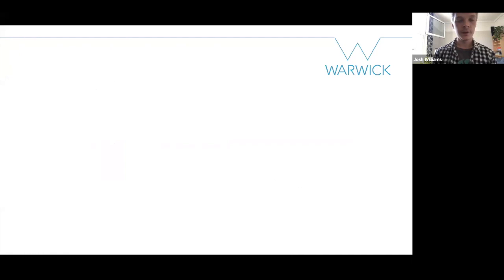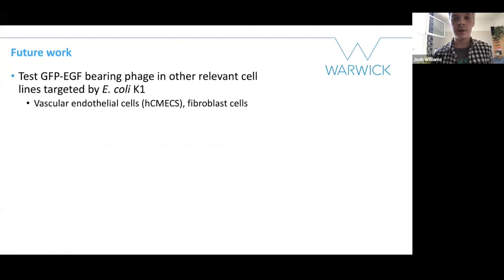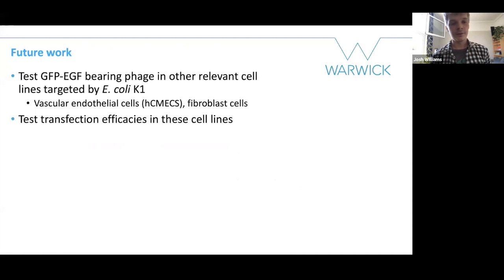Future work to round out this element of the project is to test the phage in other relevant cell lines targeted by E. coli K1, including vascular endothelial cells which compose the blood-brain barrier, and fibroblast cells which are also targeted by E. coli K1 in skin infections, and then to test the trafficking pathways in these cell lines and assess the rates of K1 clearance.